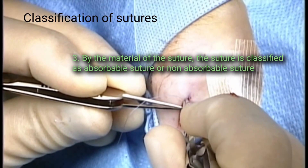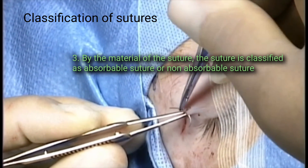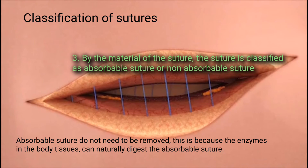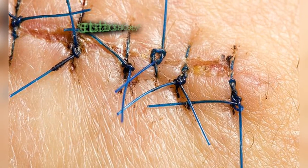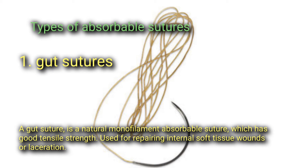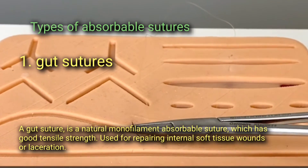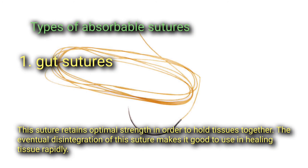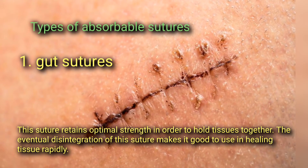Thirdly, sutures are classified as absorbable or non-absorbable. Absorbable sutures do not need to be removed because the enzymes in body tissues can naturally digest them. Types of absorbable sutures include gut sutures — a natural monofilament absorbable suture with good tensile strength, used for repairing internal soft tissue wounds or lacerations. It retains optimal strength to hold tissue together, and its eventual disintegration makes it good for use in rapidly healing tissues.